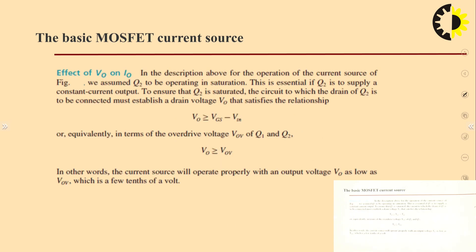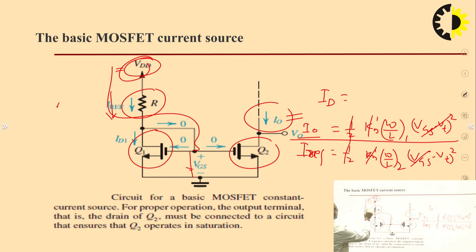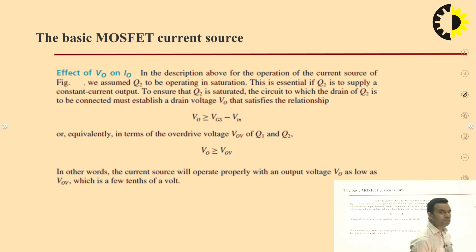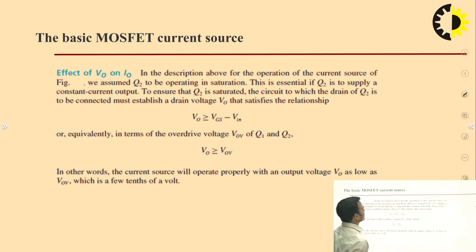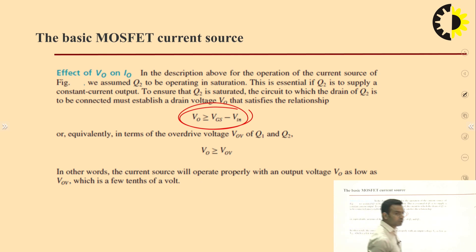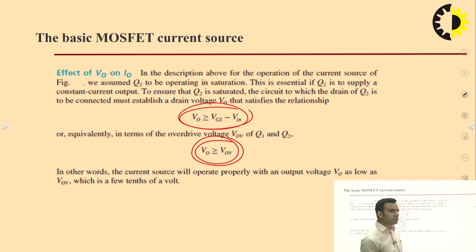The reference current will be equal to (V_DD minus V_GS) divided by the resistor R. To provide constant current, the formula I_D = half k_n(W/L)(V_GS minus V_T)² is applicable only when the transistor or MOSFET operates in the saturation region. The condition for Q to operate in saturation is that V_out should be greater than or equal to V_GS minus V_TN, the overdrive voltage, where V_TN is the threshold voltage of the NMOS.